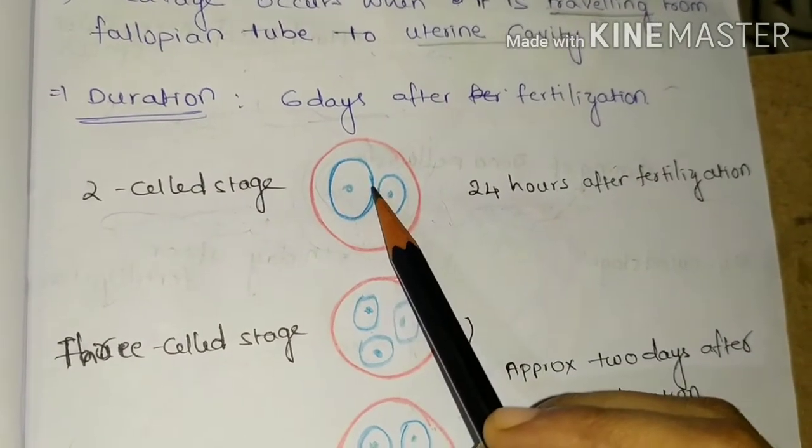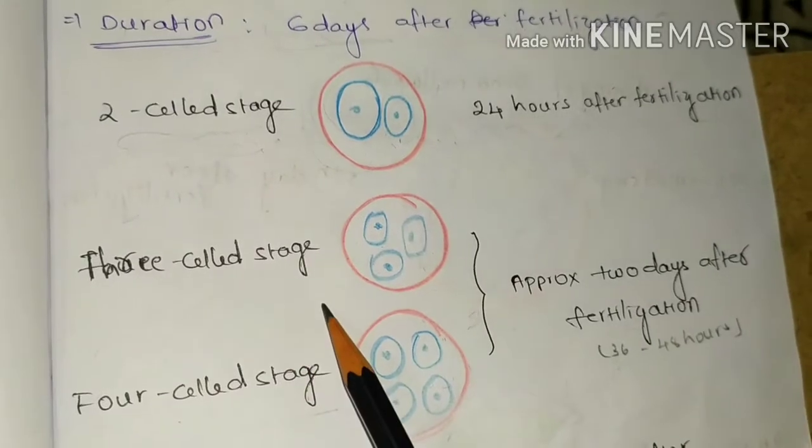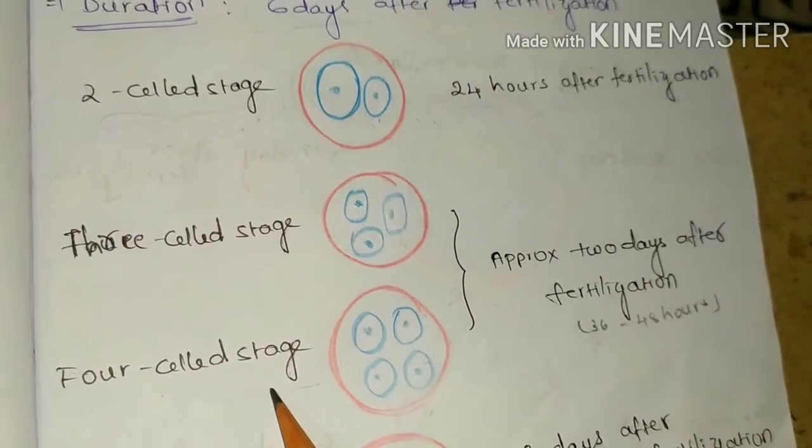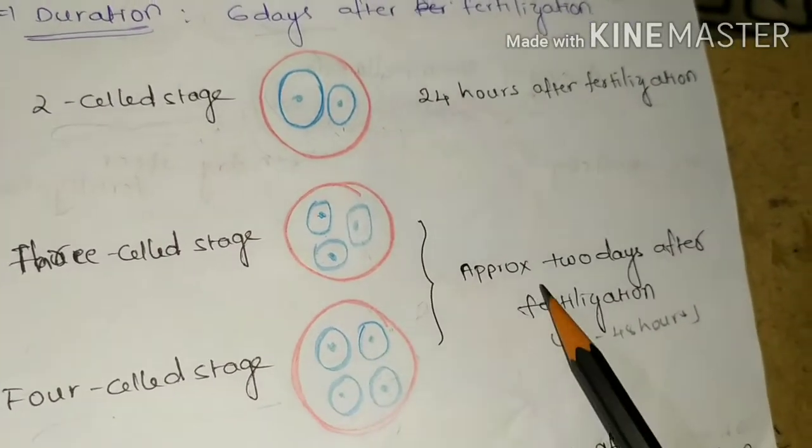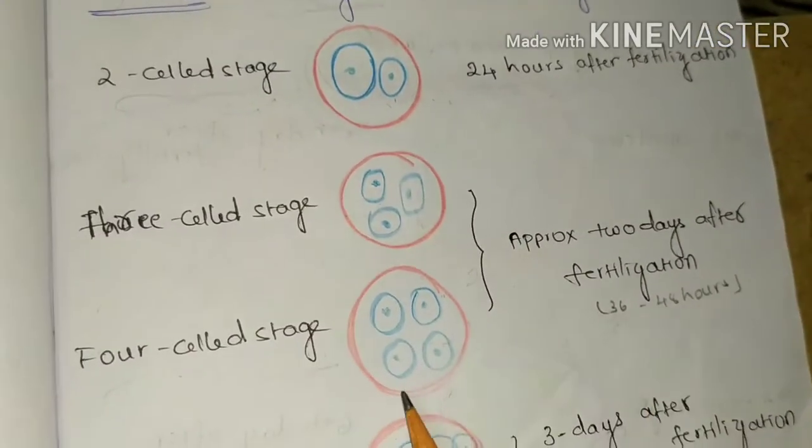First, the large cell divides and then followed by the small cell. During second phase of mitotic division, four-cell stage is formed. Three to four-cell stage is observed between two days after fertilization, that is 36 to 48 hours after fertilization.